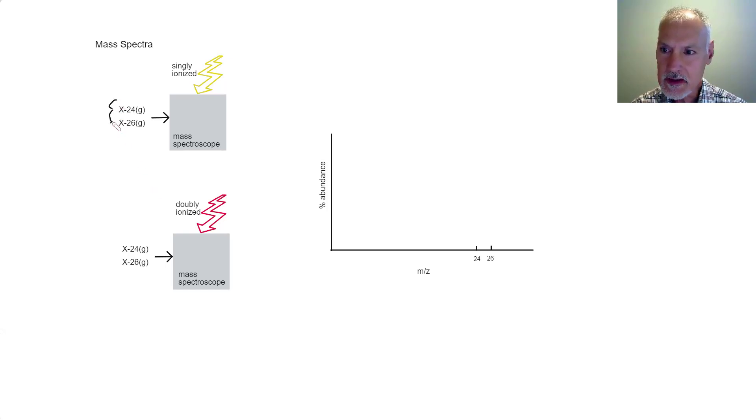Suppose I begin here with a gas, and this gas is a mixture of two isotopes of substance X, some that have a relative atomic mass of 24 and some 26. And let's say within this sample, we have 80%, that's the lighter 24, and 20%, that's the heavier, that weighs 26.